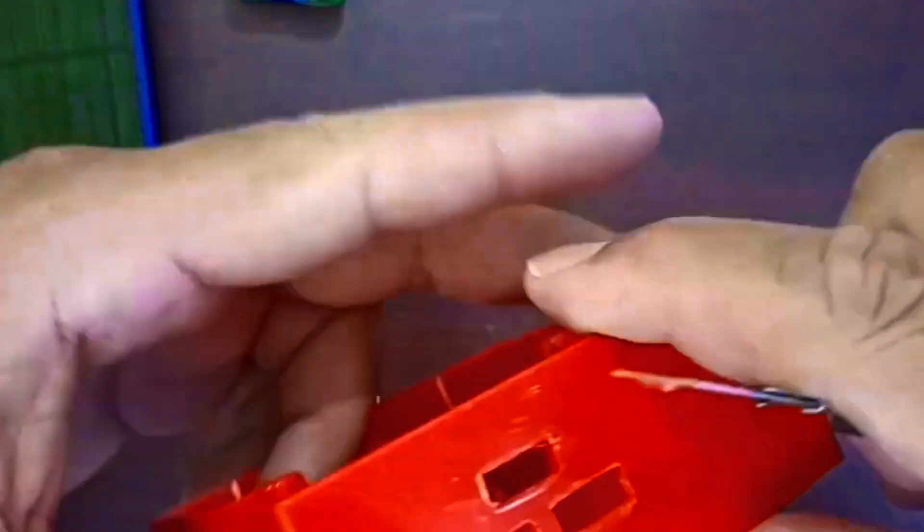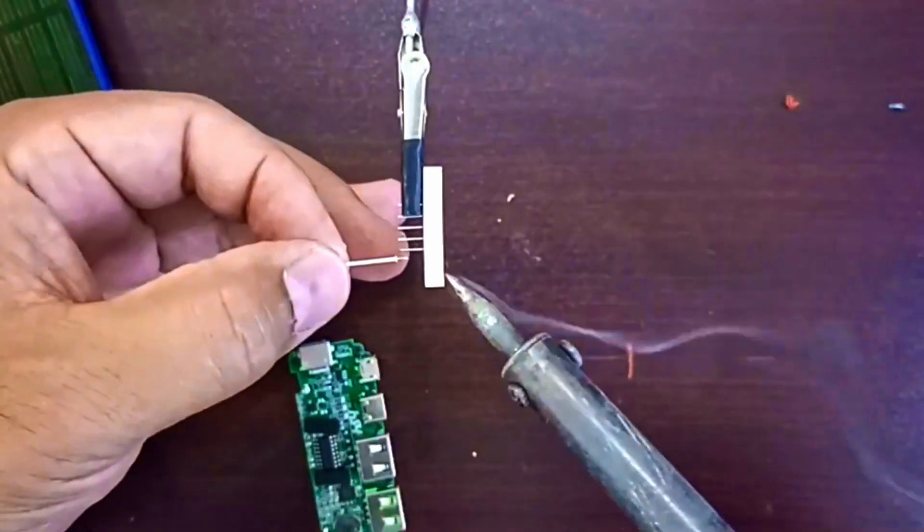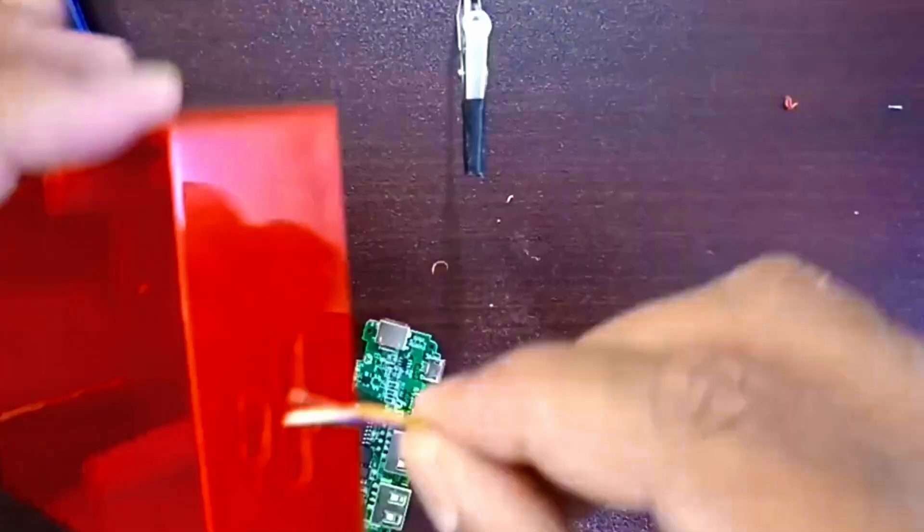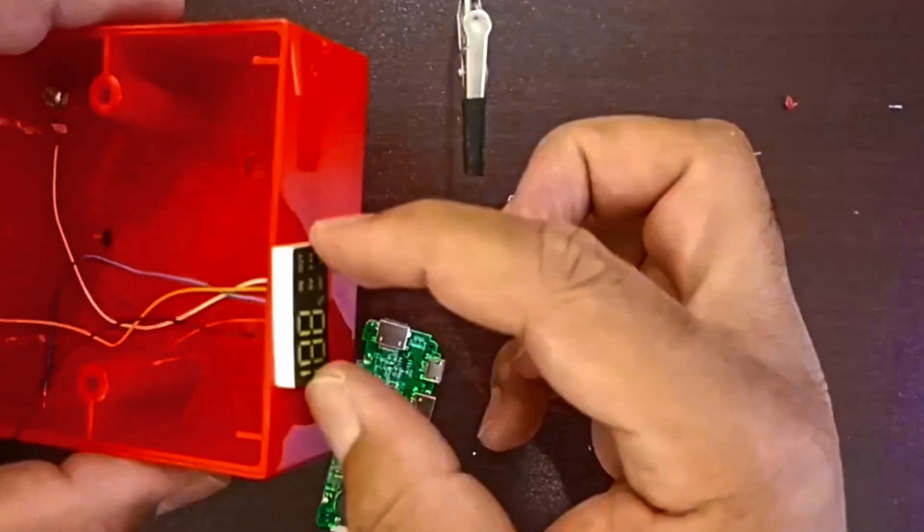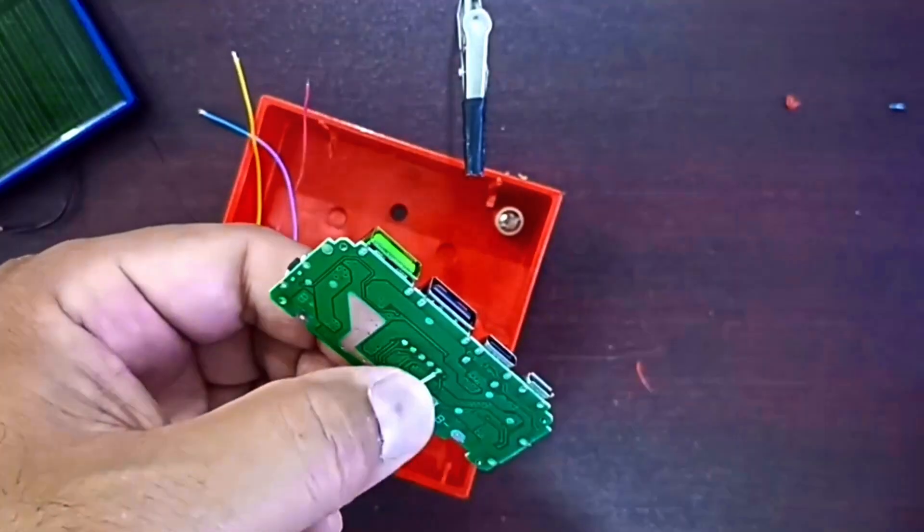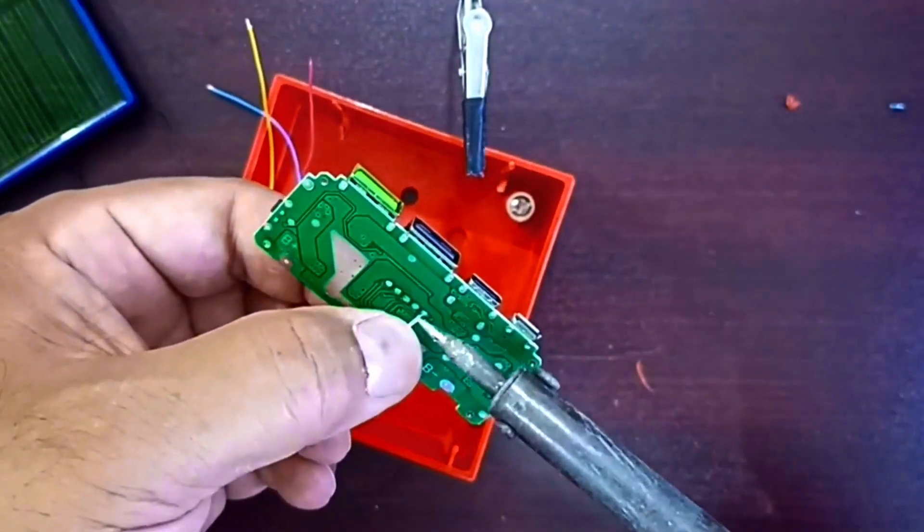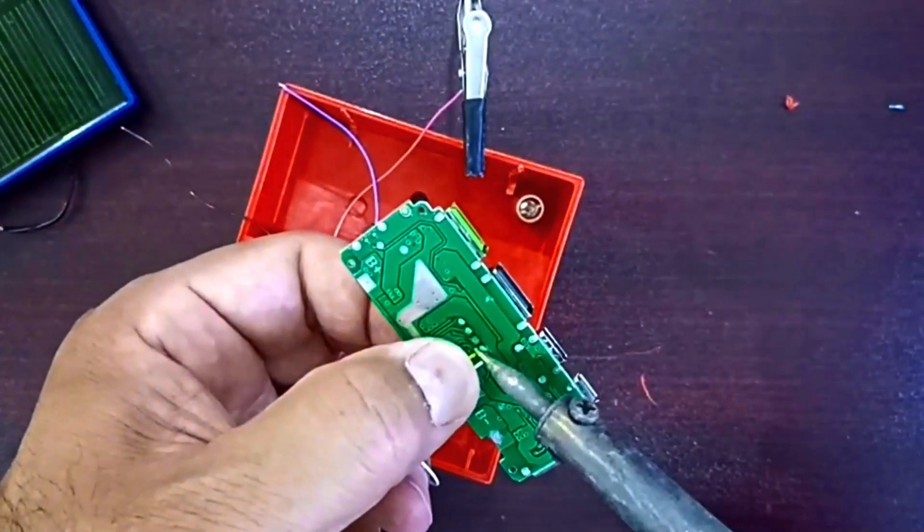Now we'll extend the display with some colored wire, feeding the wires through carefully so nothing gets pinched. Time to solder the display back to the board, pad by pad, just like it was.